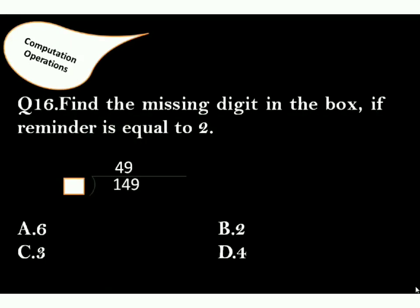Find the missing digit in the box if remainder is equal to 2. The correct answer is option C. 149 divided by 3 gives 49, and remainder will be 2.